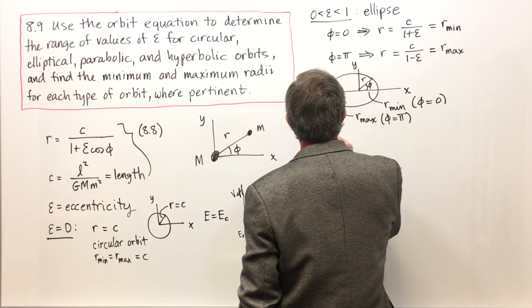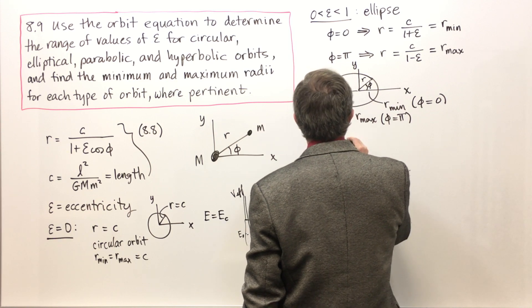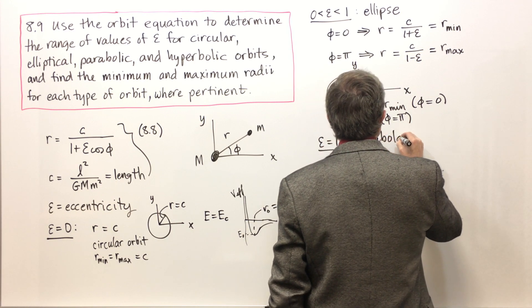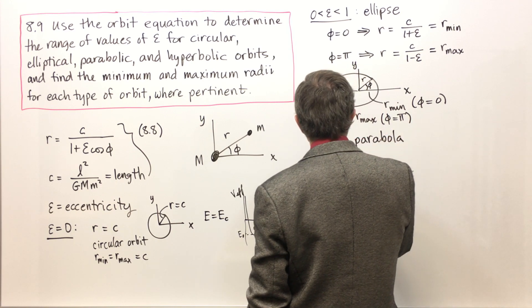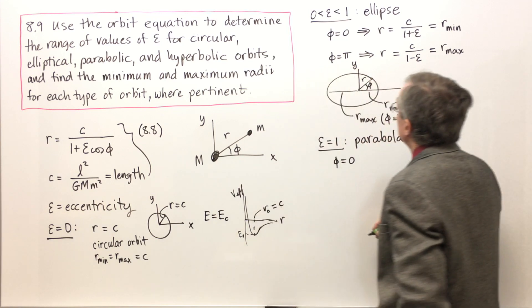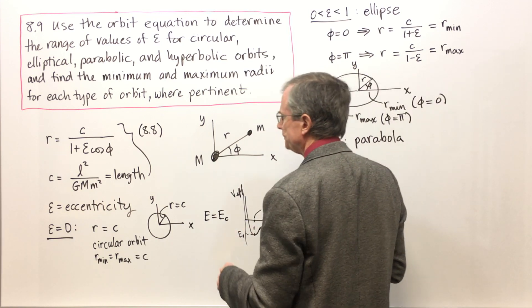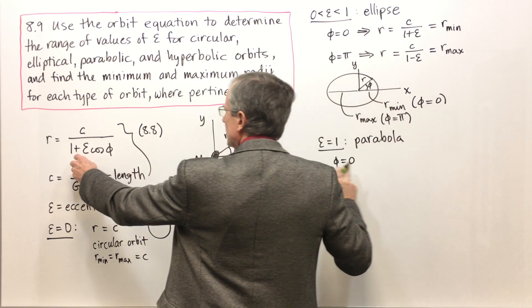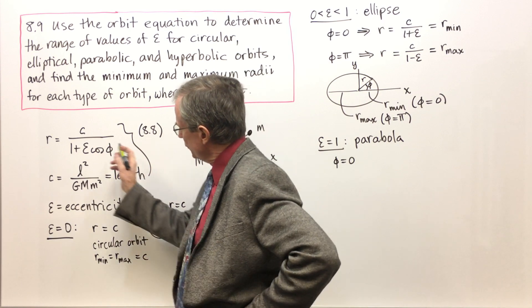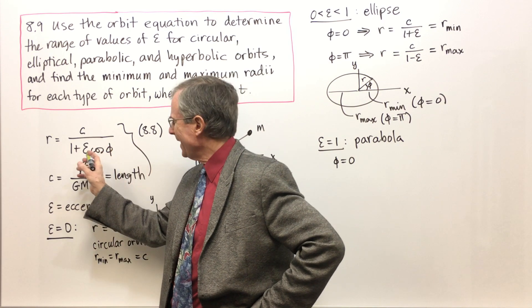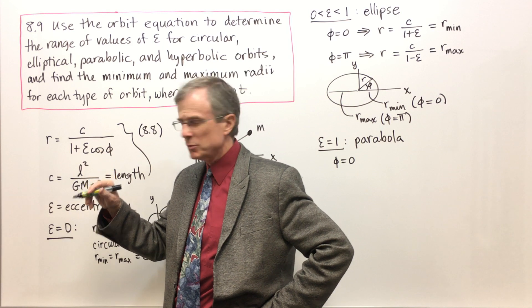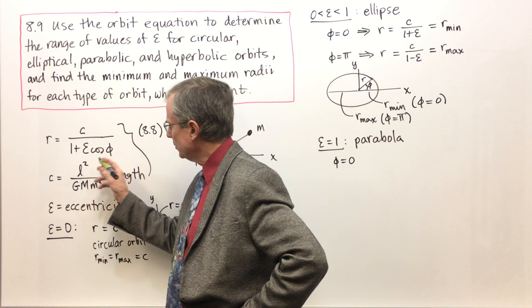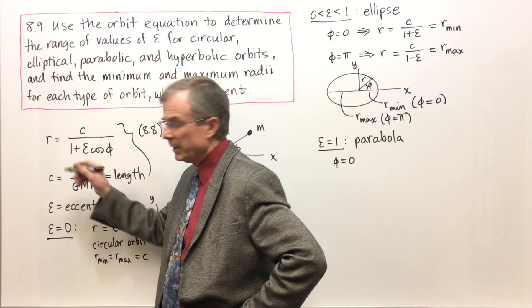Let's look at epsilon equals one. This one's going to turn out to be a parabola. Phi equals zero: epsilon equals one, cosine of zero is one, times one is one, plus one is two. So R equals C over two.